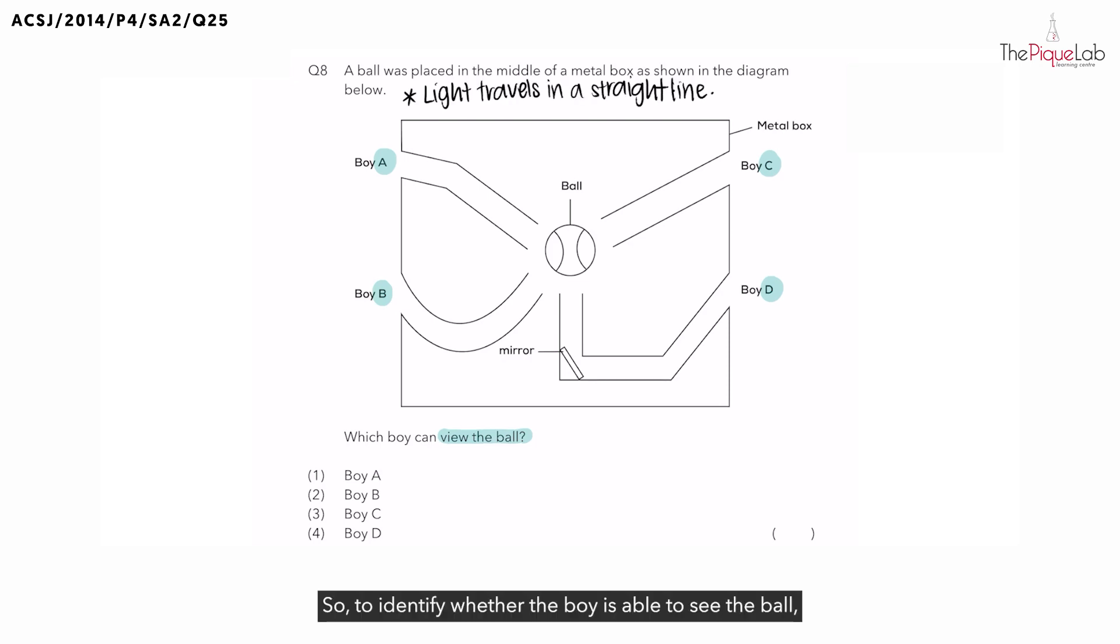So to identify whether the boy is able to see the ball, we need to draw our light rays to see whether the light reflected off the ball is able to reach the boy's eyes. So let's start with boy A. Now over here, light reflected off the ball, what do we notice?